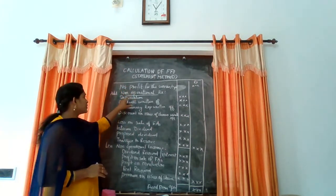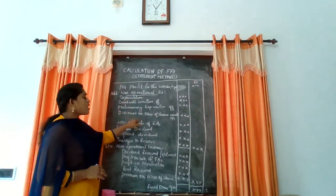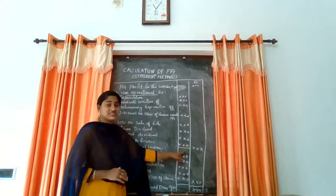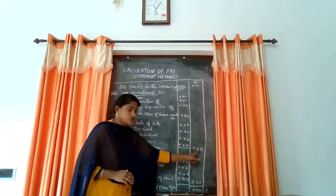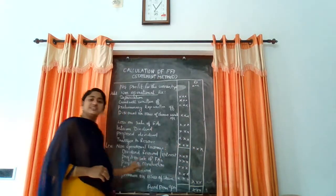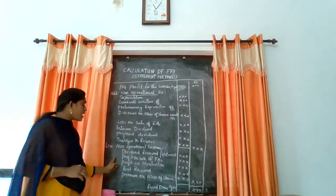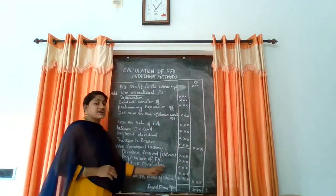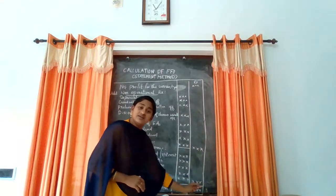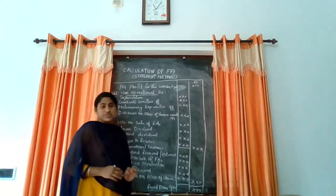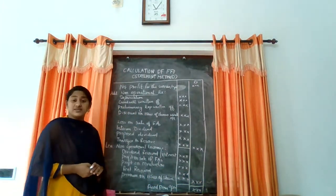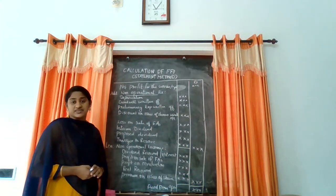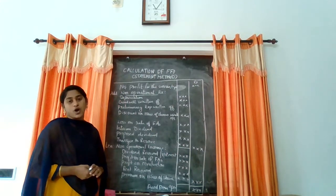So the formula is: Net Profit, add non-operational expenses, deduct non-operational income — the result is Fund from Operation.